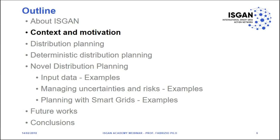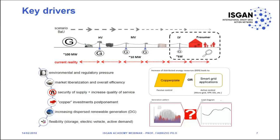The first group of slides is about the context and motivation. We have some key drivers motivating change: environmental and regulatory pressure, market liberalization, the need to improve efficiency in energy supply, security of supply, reliability, and quality of services. Also, we don't have unlimited capital for investments, so in many companies it's very important to postpone investments on copper and hard infrastructures.